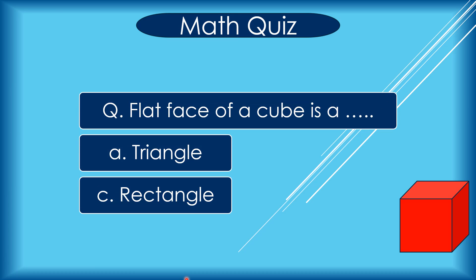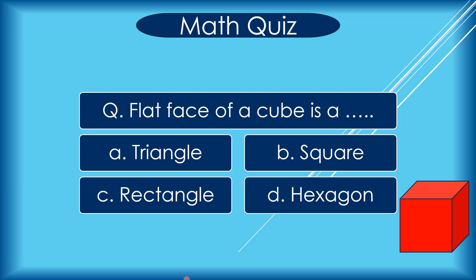The flat face of a cube is: A triangle, B square, C rectangle, D hexagon. Correct answer is B square. This is a square face, so the flat face of a cube is a square.